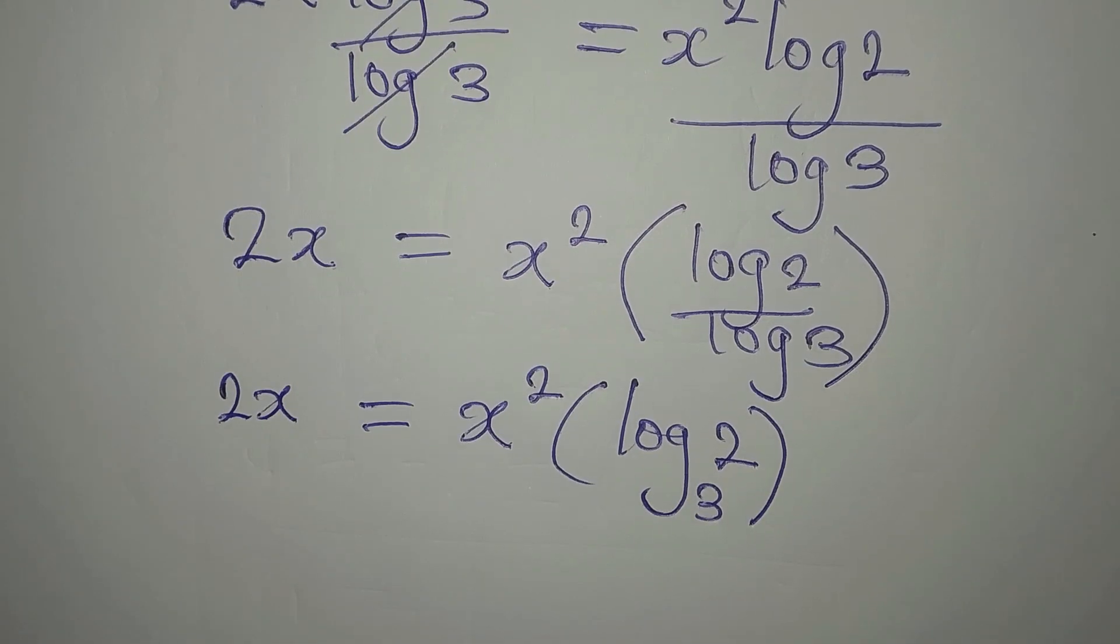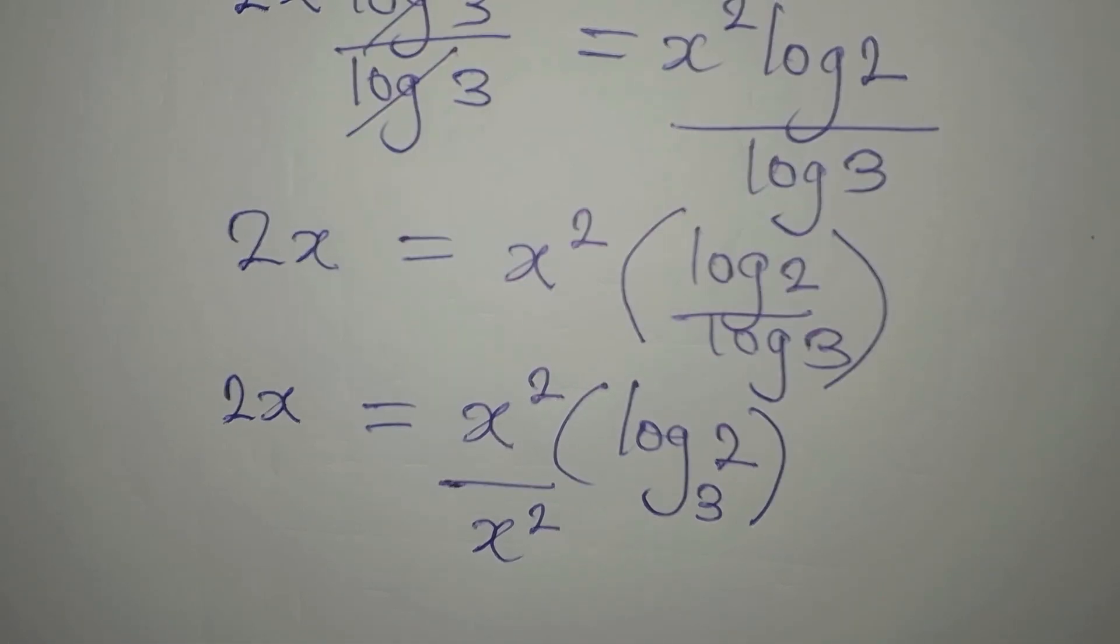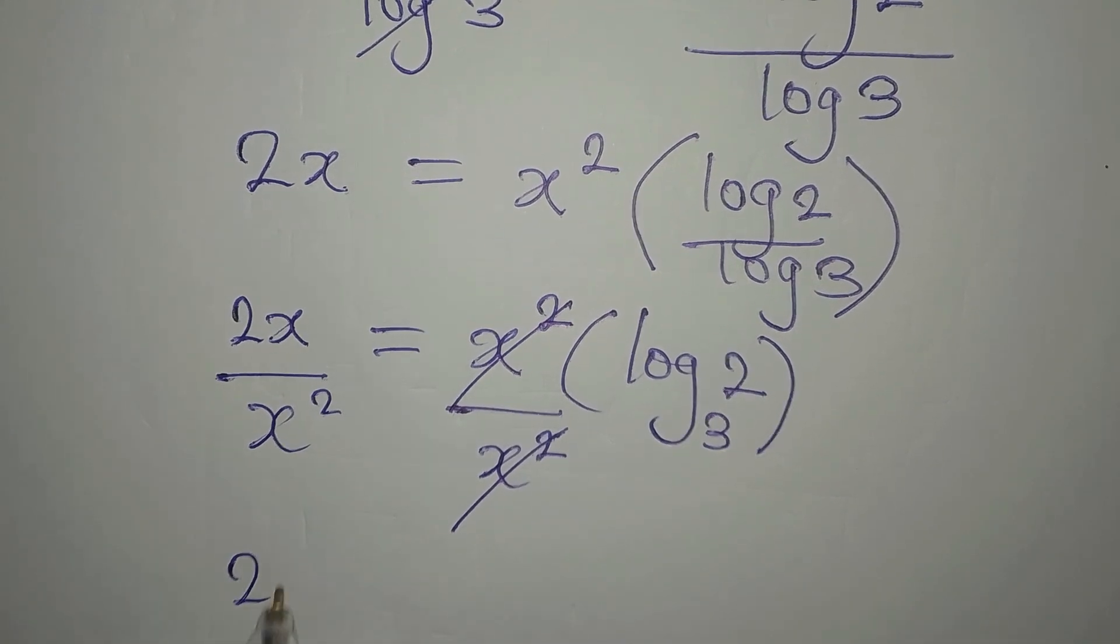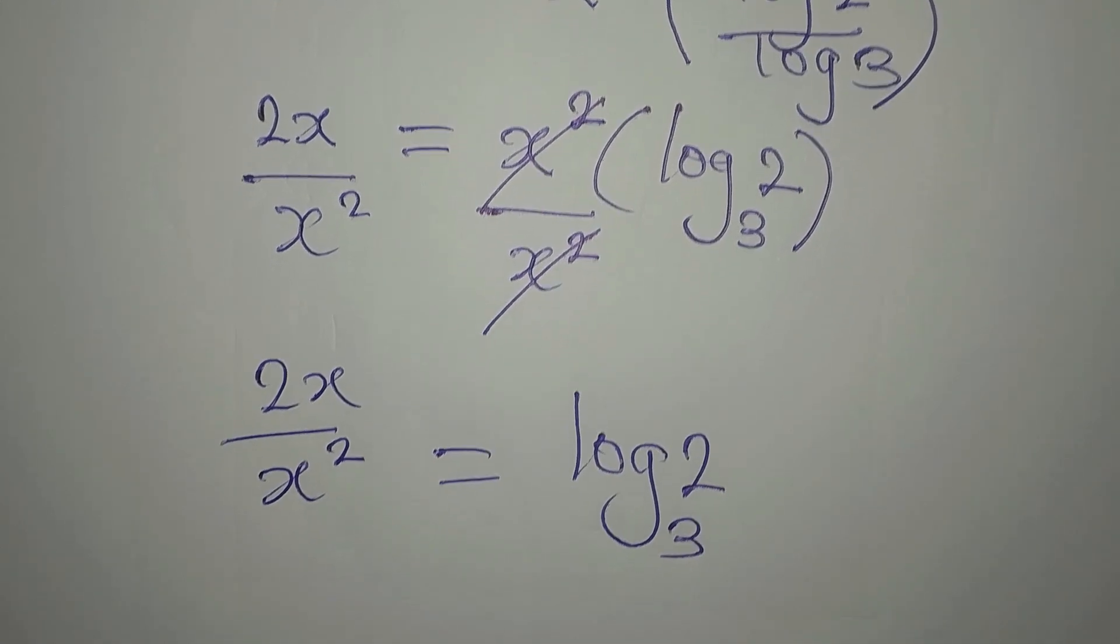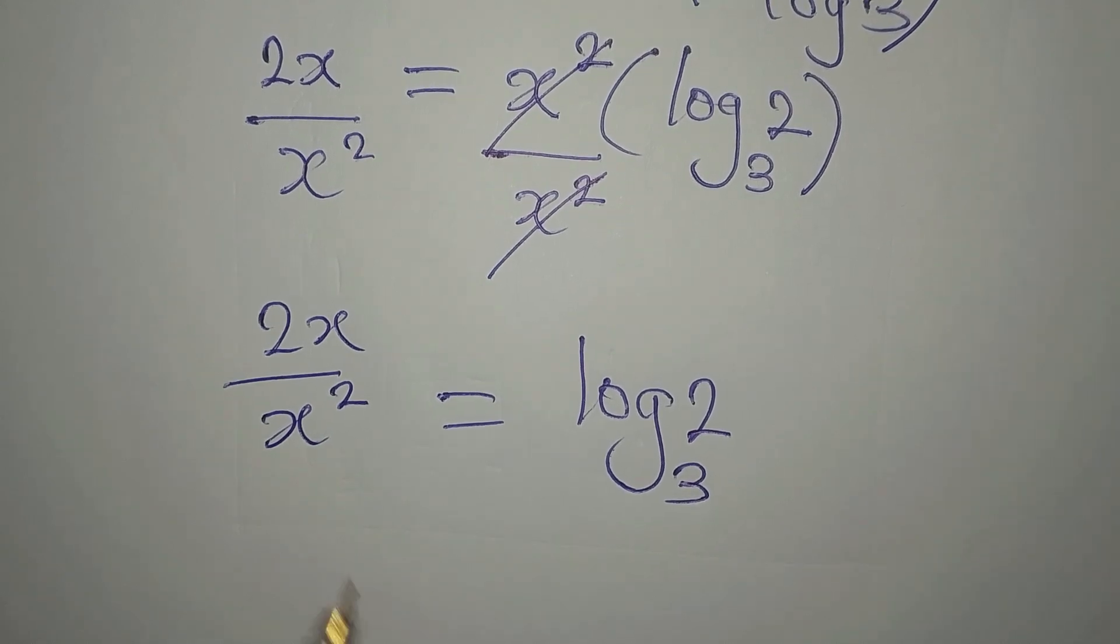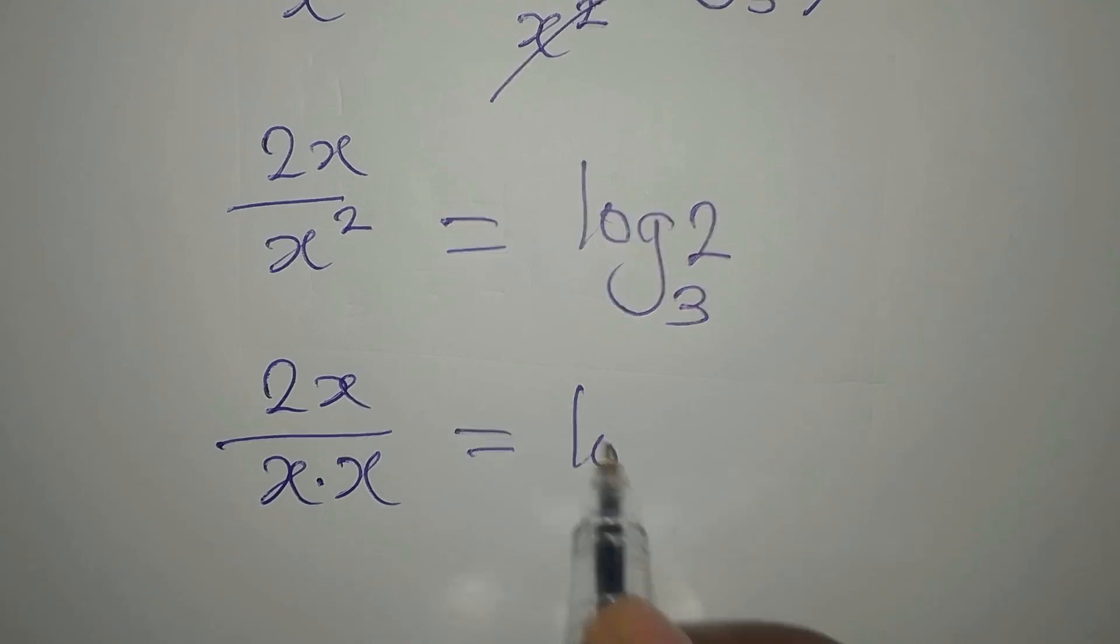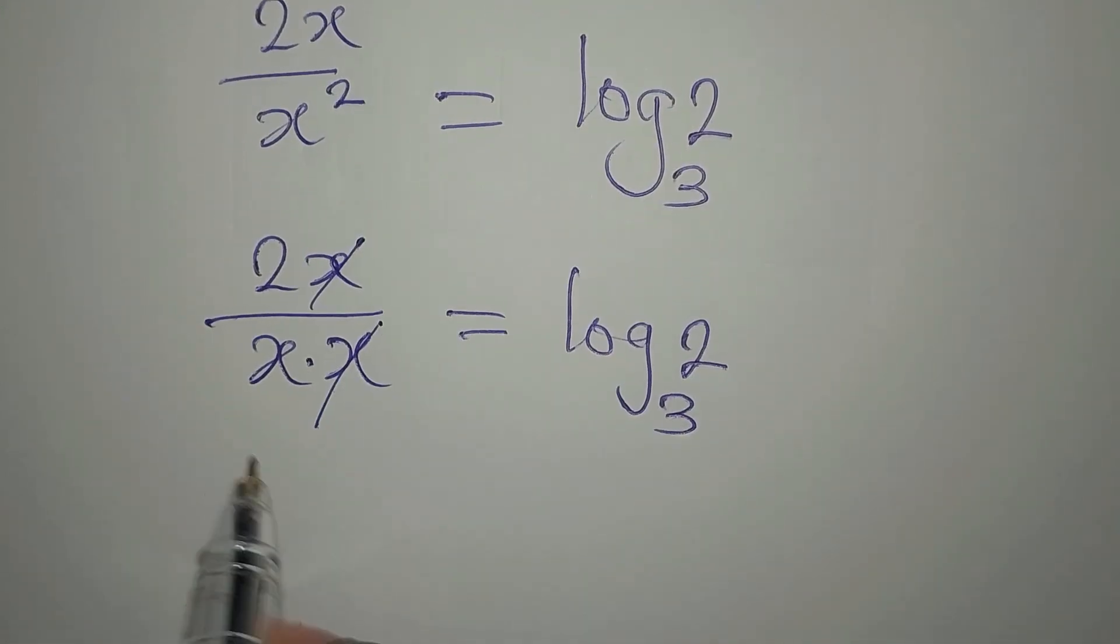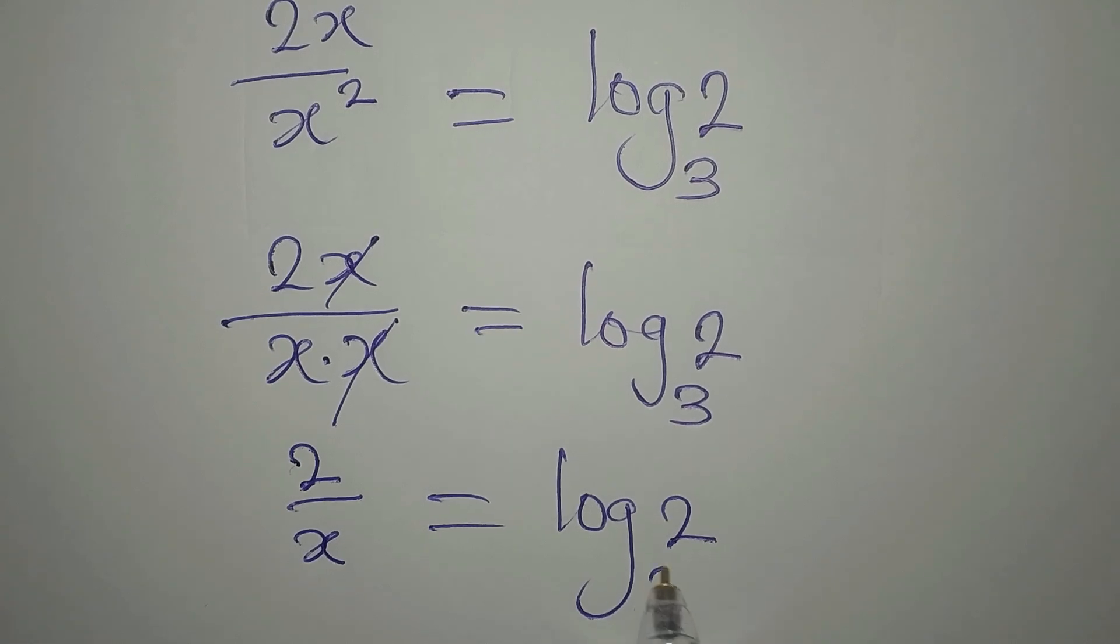We are interested in getting the x together, so what if I divide by x squared on both sides? This means that we have 2x over x squared equal to log 2 to base 3. Now, x squared is the same as x times x, so we can remove one of the x. This means we now have 2 over x equal to log 2 to the base of 3.